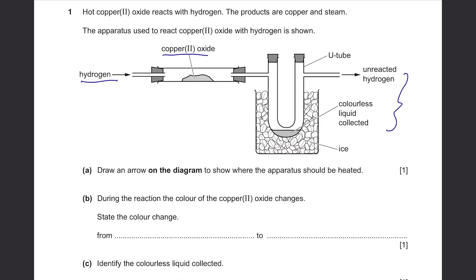Part A: Draw an arrow on the diagram to show where the apparatus should be heated. Well, it didn't mention that they're going to heat it, but since they said the product was steam, we can just assume that it's going to be heated. So if you want to heat it, obviously you'll have to heat it where the reactants are. So I'll draw it over here, right below copper(II) oxide.